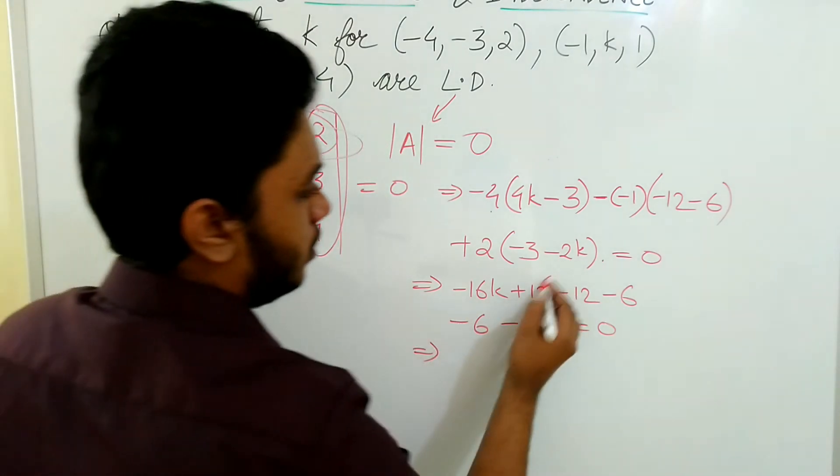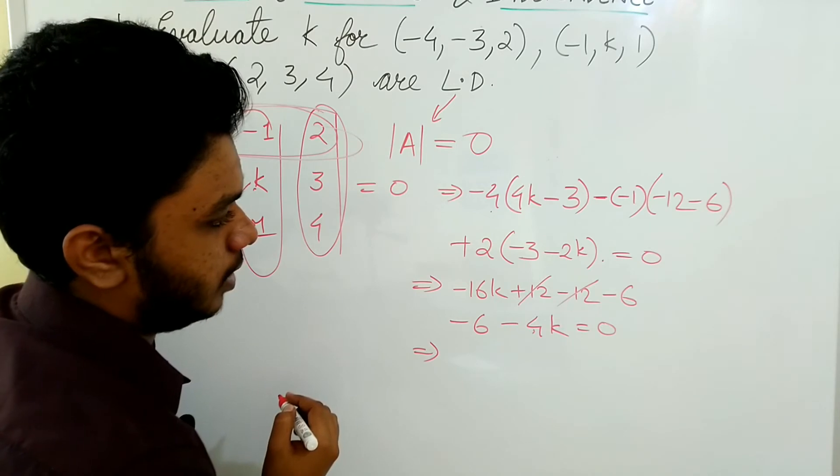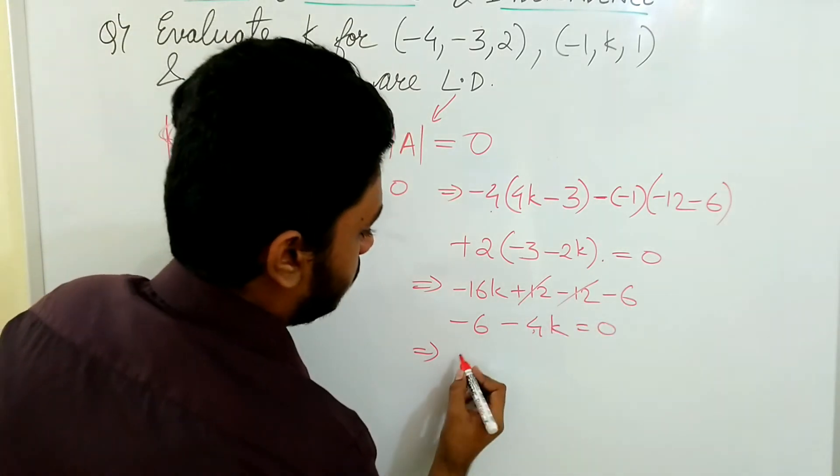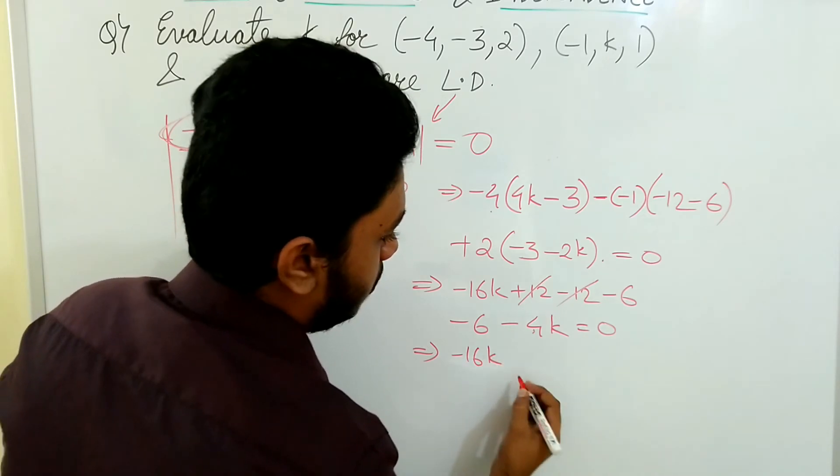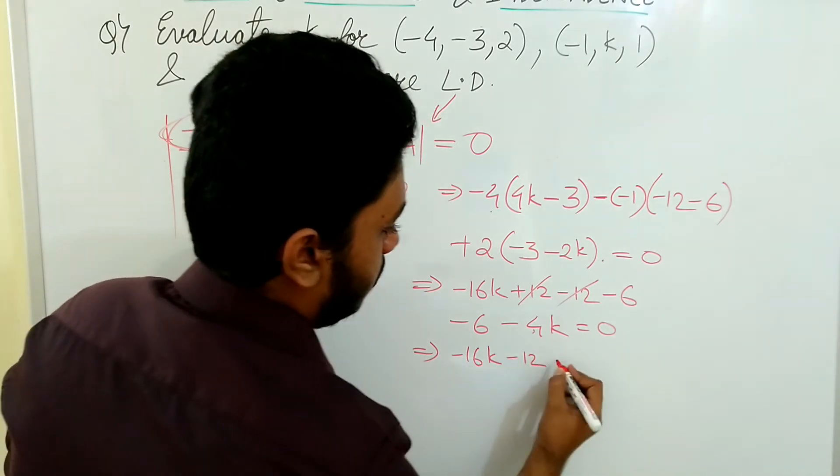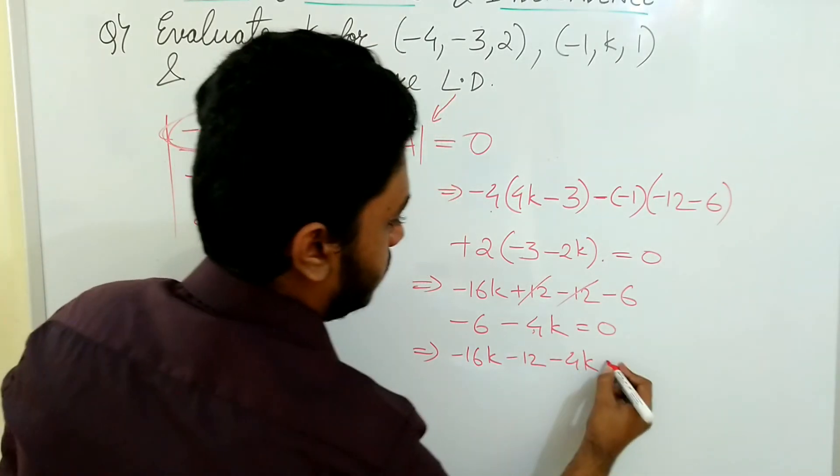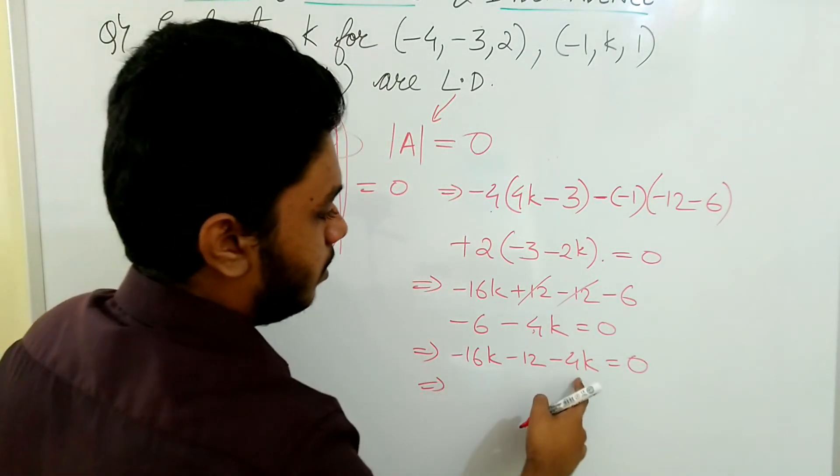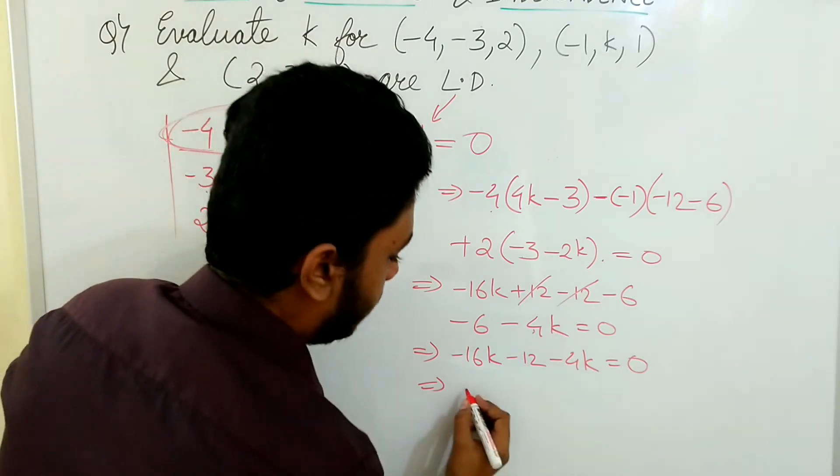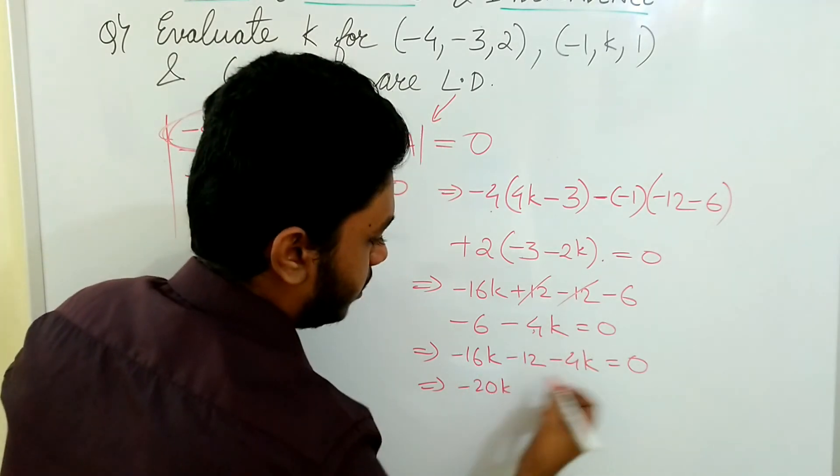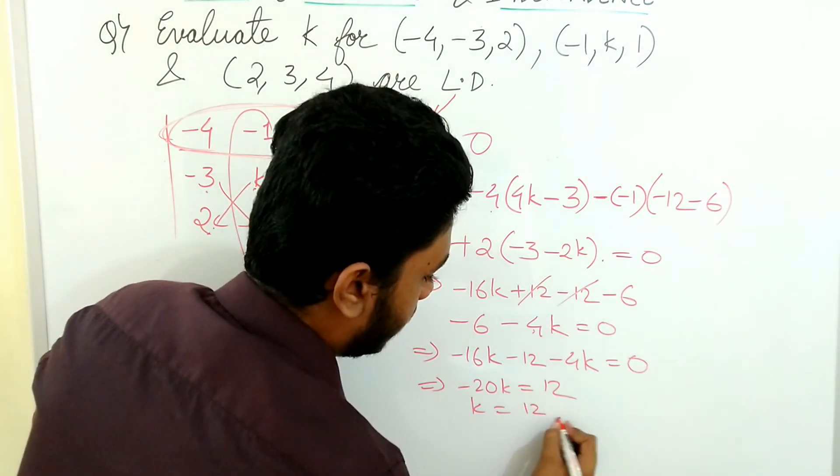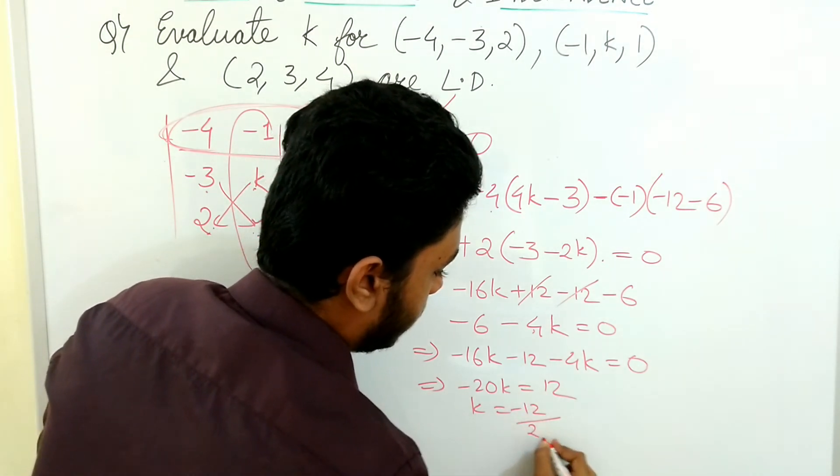Now this 2 gets cancelled. What is remaining? -16k minus 12 minus 4k is equal to 0. That implies -20k minus 12 equals 0. So k equals 20 by minus 20.